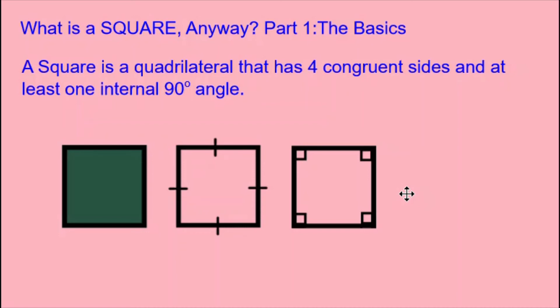Mentioning one is enough, along with four congruent sides, to make a square have all four internal 90-degree angles.